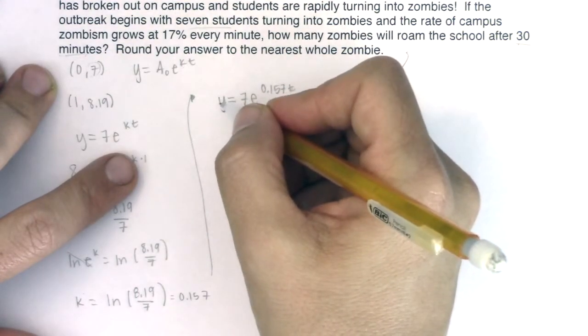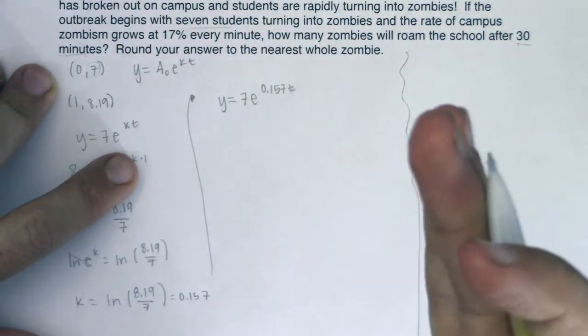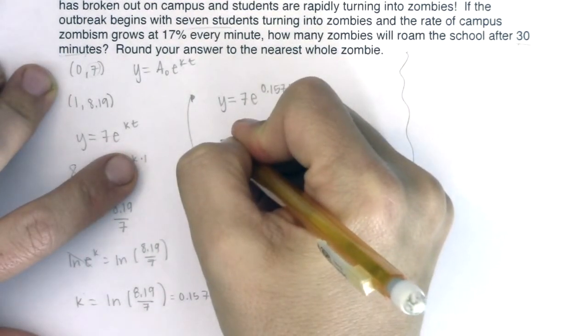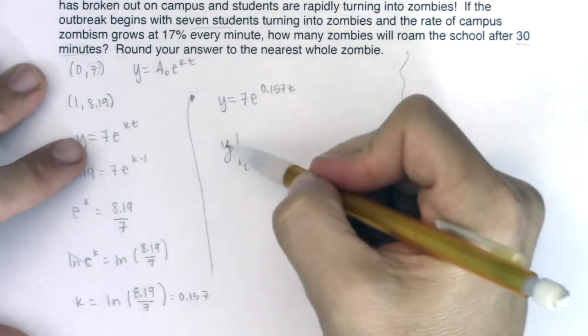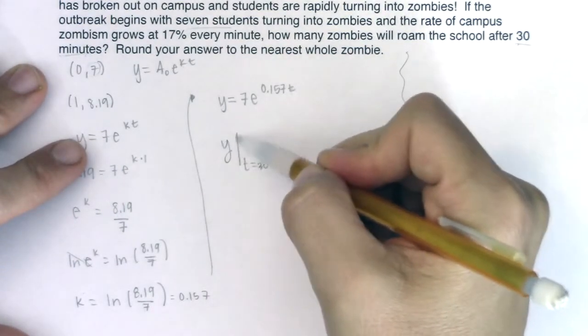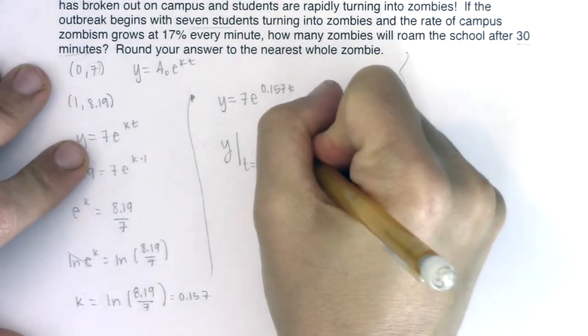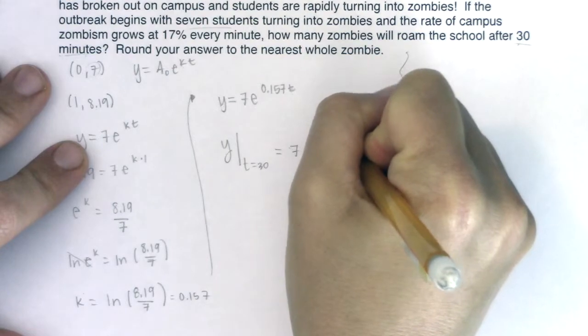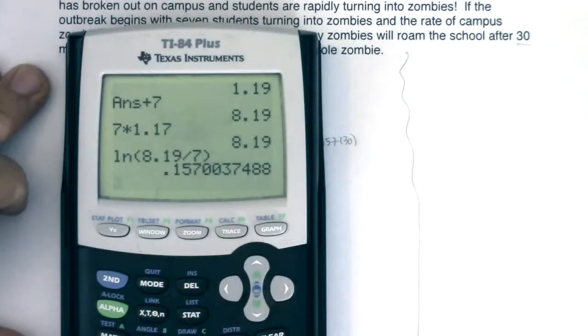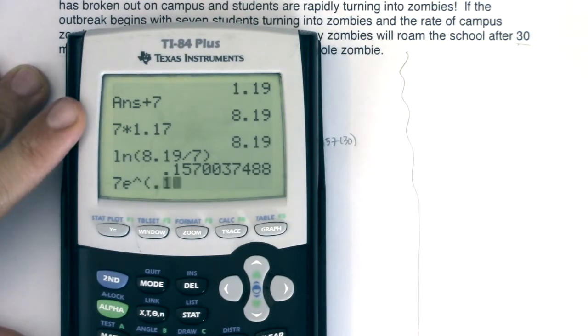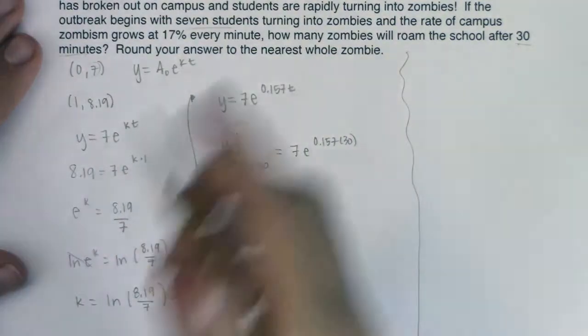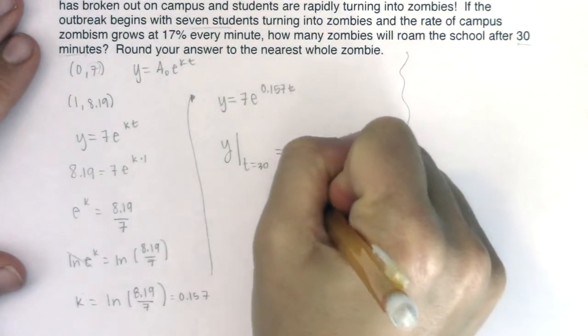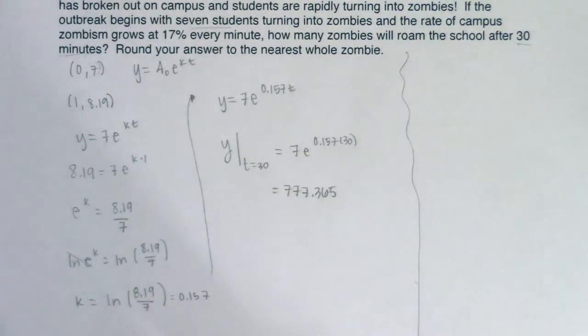This is the easier version of a problem where they give you the independent variable and ask you for the dependent. It's always trickier when they give you the y value and ask you for the t value. So here I'm going to go ahead and say what is y when t is equal to 30? This is notation where we say get the y value at t equaling 30. So this will be 7e to the 0.157 times 30 and let's see what that number is equal to. So we'll go 7e to the 0.157 times 30.